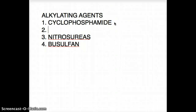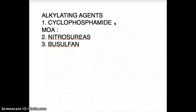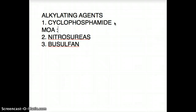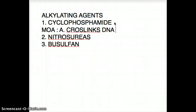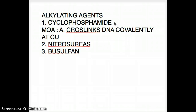Let's talk about cyclophosphamide first, starting with the mechanism of action. The mechanism of action of cyclophosphamide is that it cross-links DNA at guanine N7, and it does it covalently. So mechanism A would be: cross-links DNA covalently at guanine N7.